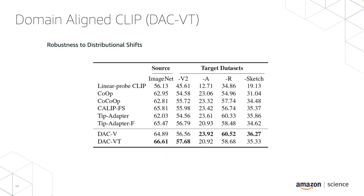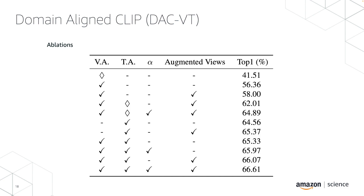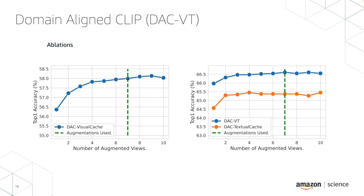We also observed robustness to distributional shifts. Our intramodal classifier improved robustness, visible in DAC-V results. DAC-VT also performs well but loses accuracy on some datasets, possibly because textual adaptation is more prone to distributional shifts than the visual. We performed ablations where the diamond indicates the default CLIP setting — combining all introduced features gives the best overall performance. Each image was augmented seven times, which is the most optimal setting for both the visual cache classifier and overall classification accuracy.